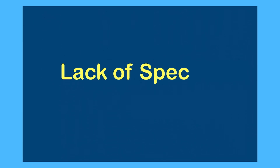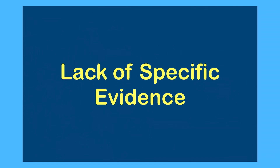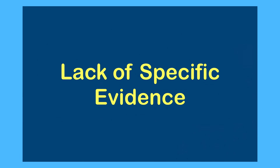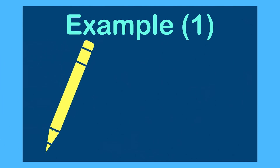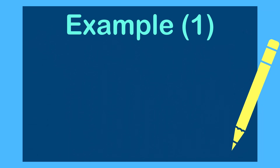This video has all my tips that I'm going to be giving to my own students to help them be more successful on the 2020 exam. The biggest piece of advice I have for students is to make sure you have specific evidence. It's something I'm going to be hammering into my own students between now and May, because it's absolutely crucial based on the new rubric. If you have generalizations or only some specific evidence, you're going to get either a one or a two in Row B.